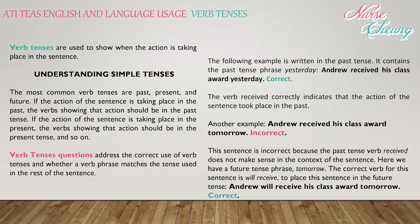Let's start with understanding verb tenses. Verb tenses are used to show when the action is taking place in the sentence. The most common simple tenses are past, present, and future. If the action is taking place in the past, the verb should be in the past tense, and so on. Consider this example written in the past tense, containing the past tense phrase 'yesterday': 'Andrew received his class award yesterday.' This is correct — the verb 'received' correctly indicates the action takes place in the past.